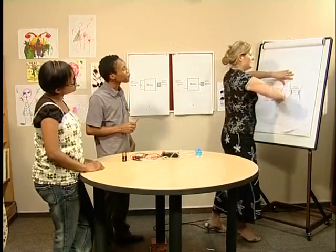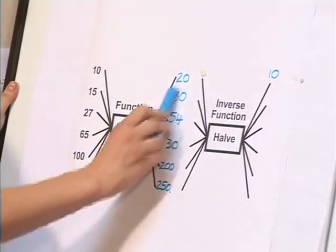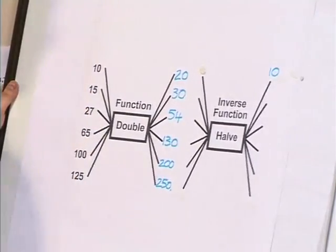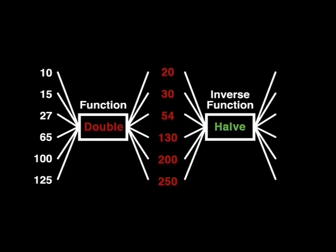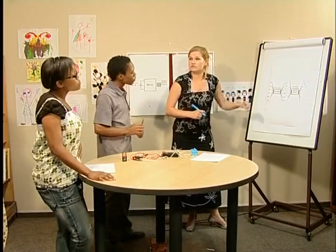Have a look here. Remember that the inverse function takes the output of the function, acts on it, and produces the input value of the original function as its output. Now we can complete our diagram. The way I understand it is that if this output of 20 from the function is used as an input to the inverse function, then the action of the inverse function on this value would be to produce the original input, namely 10. Can you complete the rest of the table? Let me give it a try. We would expect that if we act on 30 using the inverse function, then we should get the output 15. Similarly, when we act on 54 using the inverse function, we should expect to get the output 27.